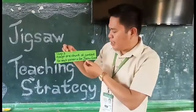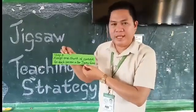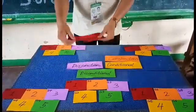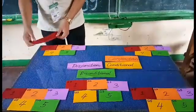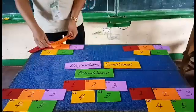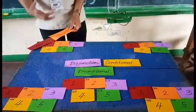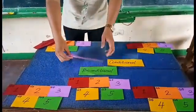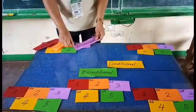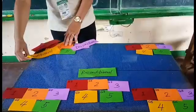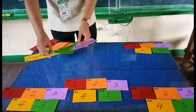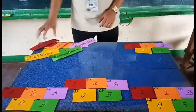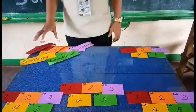Step number three: assign one chunk of content to each person in the group. So student number one is assigned negation, student number two is assigned conjunction and is expected to research that topic prior to the lesson. Student number three is assigned disjunction, student number four is assigned conditional, and student number five is assigned biconditional. The same applies to groups two, three, four, and five — each student has a corresponding assignment on mathematical logical operators.